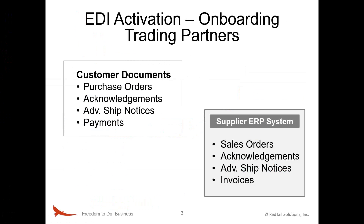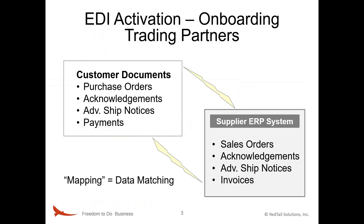The basic idea of EDI is elementary: enable automated commerce by connecting electronic versions of ordinary business documents from the buyer's systems to the supplier's ERP system. EDI mapping refers more specifically to the setup of each required field in each document so that they correspond correctly on both sides of the transaction.